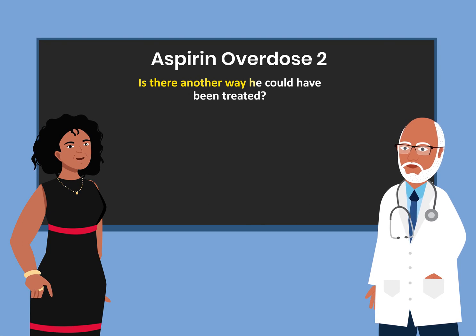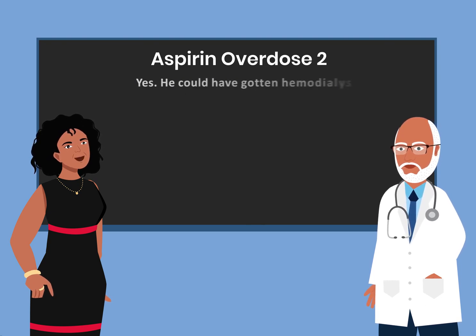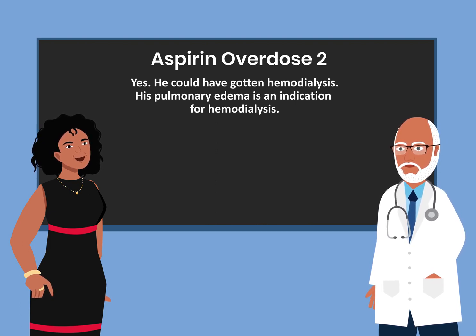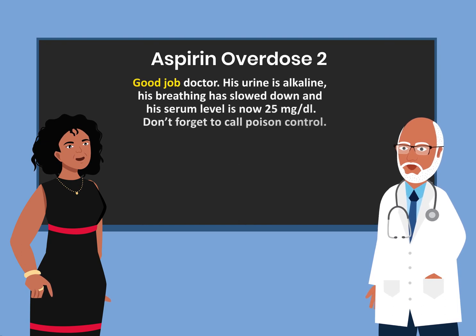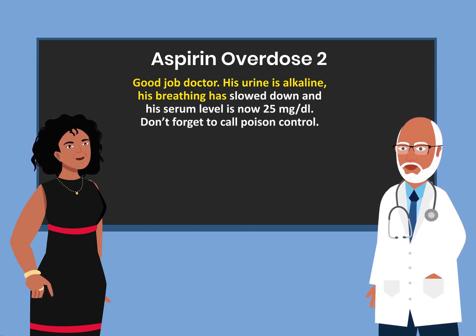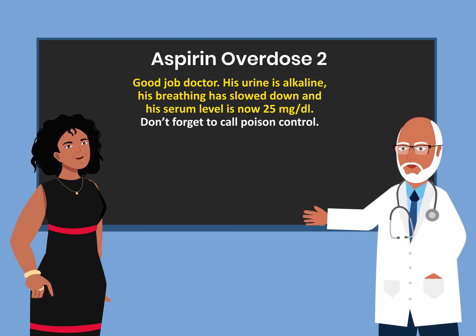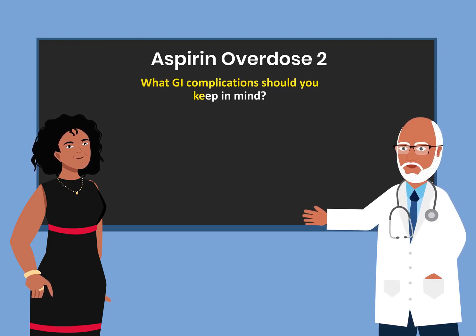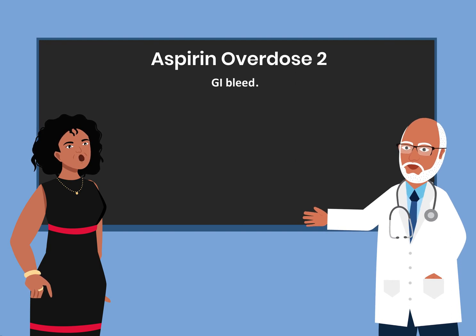He could also have been treated with hemodialysis — his pulmonary edema is an indication for hemodialysis. His urine is now alkaline, his breathing has slowed down, and his serum level is now 25 mg per dL. Please don't forget to call poison control. Always keep in mind GI bleeding as a potential complication.